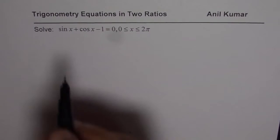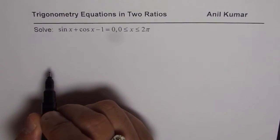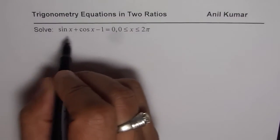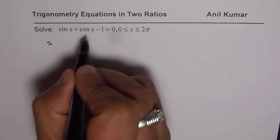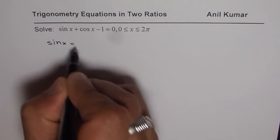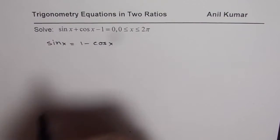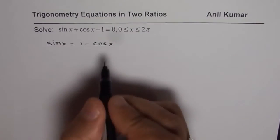As you can see there is no easy way to do it. Now how to solve such an equation? The best way is we can actually take cos x minus 1 on the other side. So we get sin x equals to 1 minus cos x. We will just rearrange and then we square both sides.